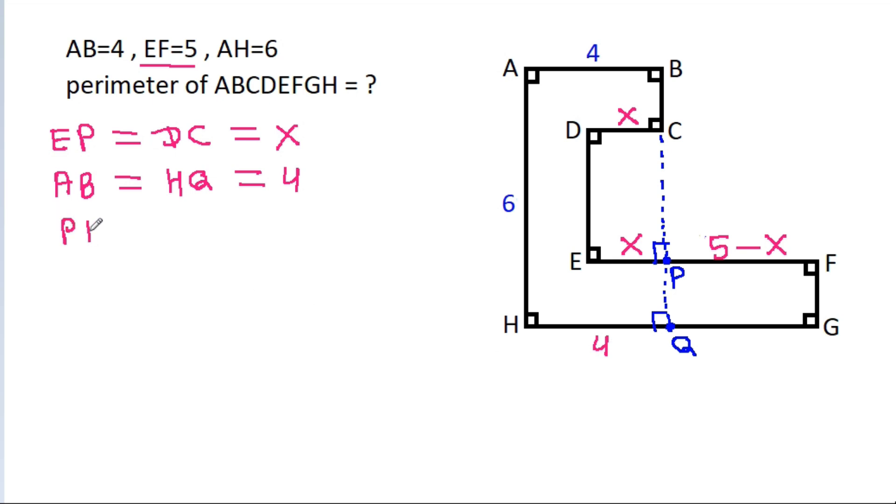And PF will be equal to QG, that will be 5 minus X. And suppose BC is a, DE is b, and FG is c.